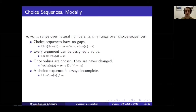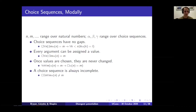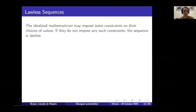If we let Roman variables range over natural numbers and Greek variables range over choice sequences, then first, choice sequences have no gaps — as you choose values, you've already chosen values on all earlier arguments. Second, every argument can be assigned a value — you're never going to get stuck. Third, once values are chosen they're never changed — you pick alpha(n) equals m, then it stays m for the rest of time. And fourth, a choice sequence is always incomplete, capturing that they're not just potentially infinite but merely potentially infinite — there's always something you haven't done yet.